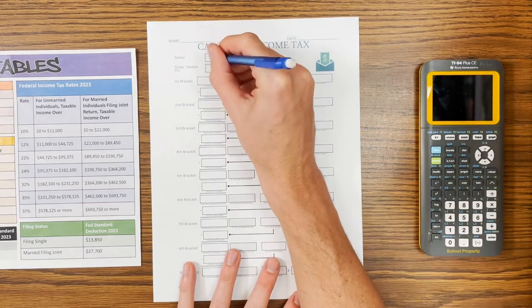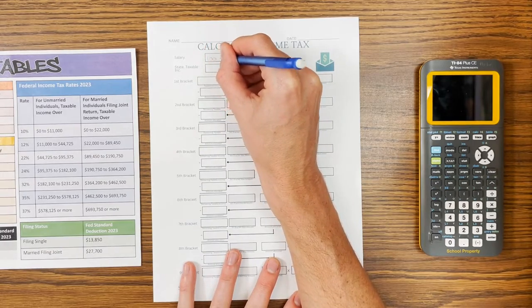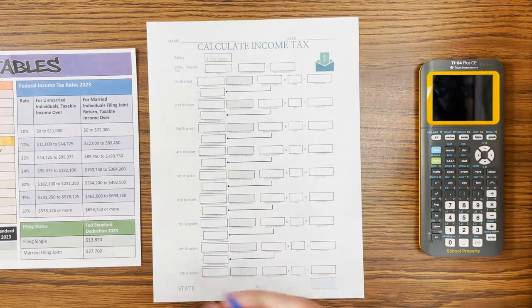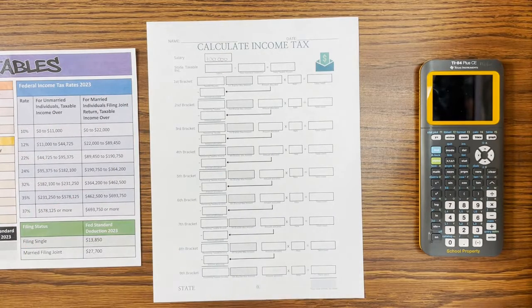We are going to do a salary of $100,000 — not because that's an average income or anything like that, but just because it's a nice round number. It lets us go through a bunch of brackets to show off what the brackets actually look like for the state of Virginia.